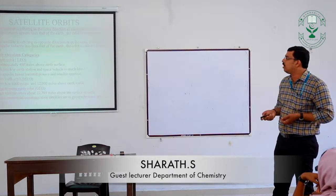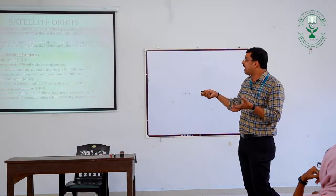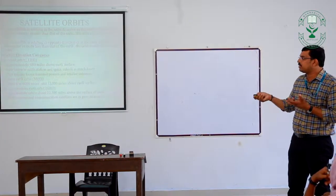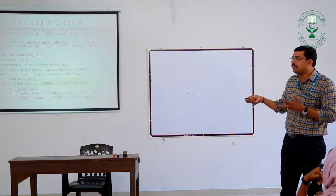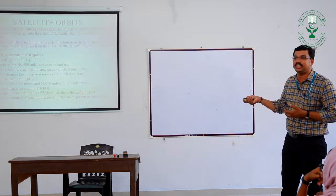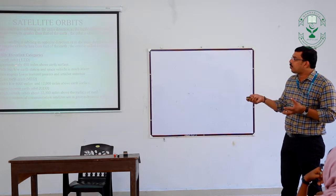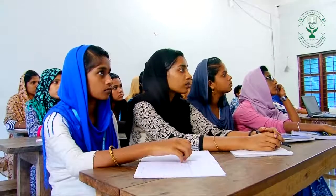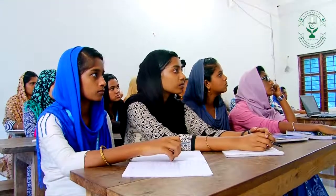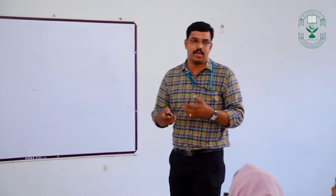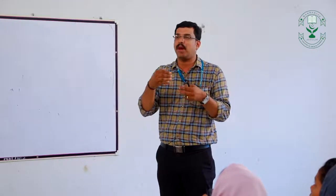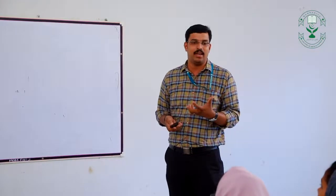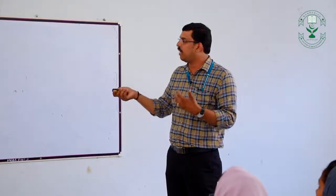Another classification is by elevation. There are three elevation categories: Low Earth Orbit (LEO), Medium Earth Orbit (MEO), and Geosynchronous Earth Orbit (GEO). Low Earth Orbit satellites are approximately 480 miles above the Earth's surface. They are close to Earth, so path loss between Earth station and space station is much lower, requiring lower transmit power and smaller antennas.